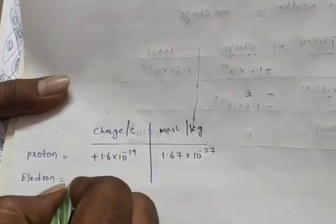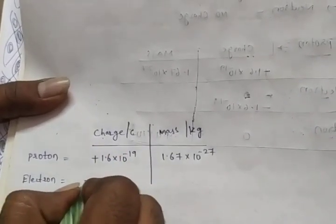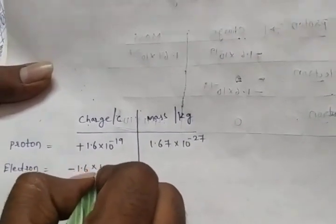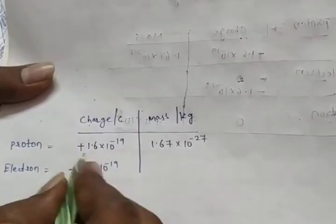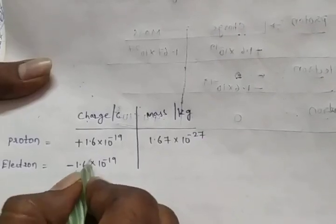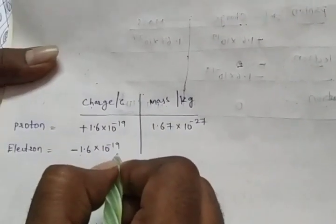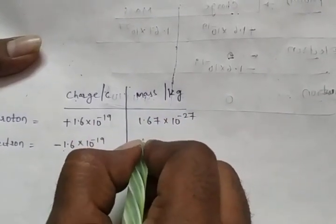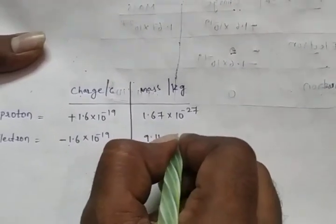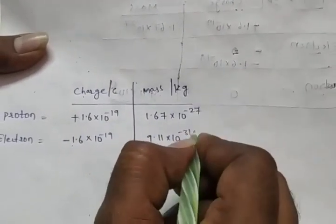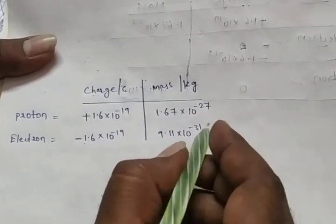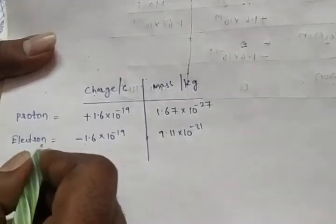Next, the electron. Electron has a negative charge: minus 1.6 into 10 to the power of minus 19 Coulombs. The mass of an electron is 9.11 into 10 to the power of minus 31 kilograms.